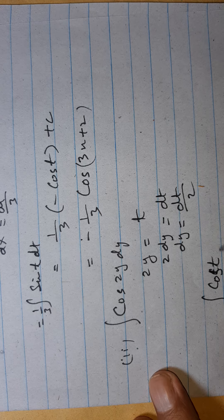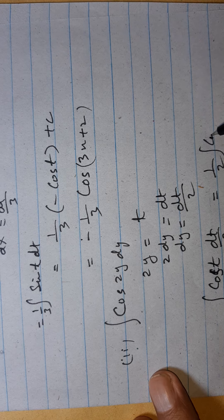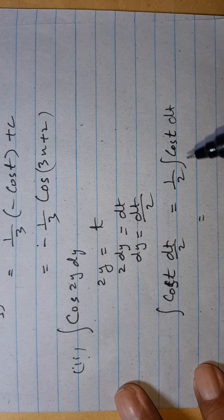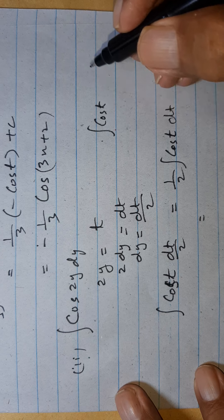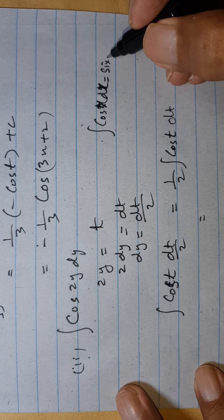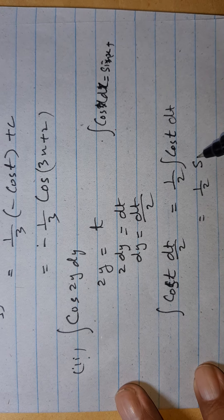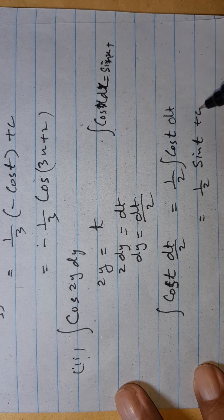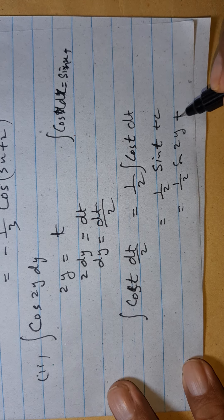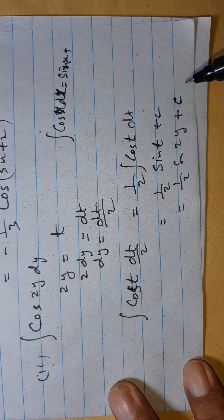We can write cos t times dt by 2, which is 1 by 2 cos t dt. When we integrate cos t dt we get sin t plus c. Therefore we can write 1 by 2 sin t plus c, and since t equals 2y, this is 1 by 2 sin 2y plus c.